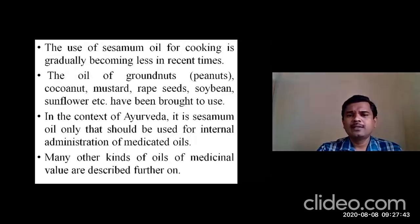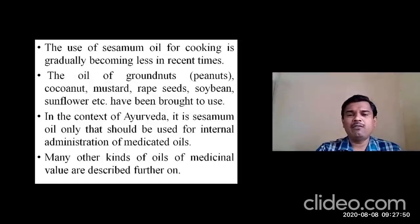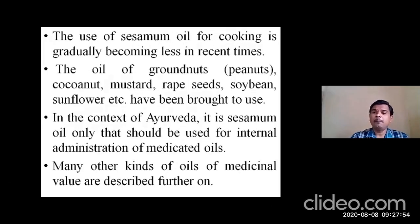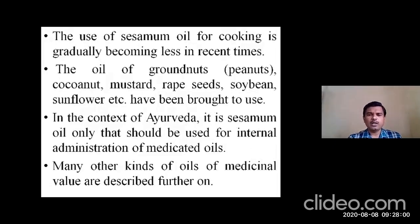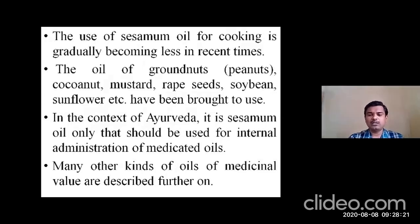The use of Thila Thaila for cooking is gradually becoming less in recent times. Nowadays, oils from peanuts, coconut, mustard, rapeseed, soybean, sunflower, etc., have come into use. In the context of Ayurveda, sesame oil is the one that should be used for internal administration of medicated oils. Many other kinds of oils with medicinal values are described further.